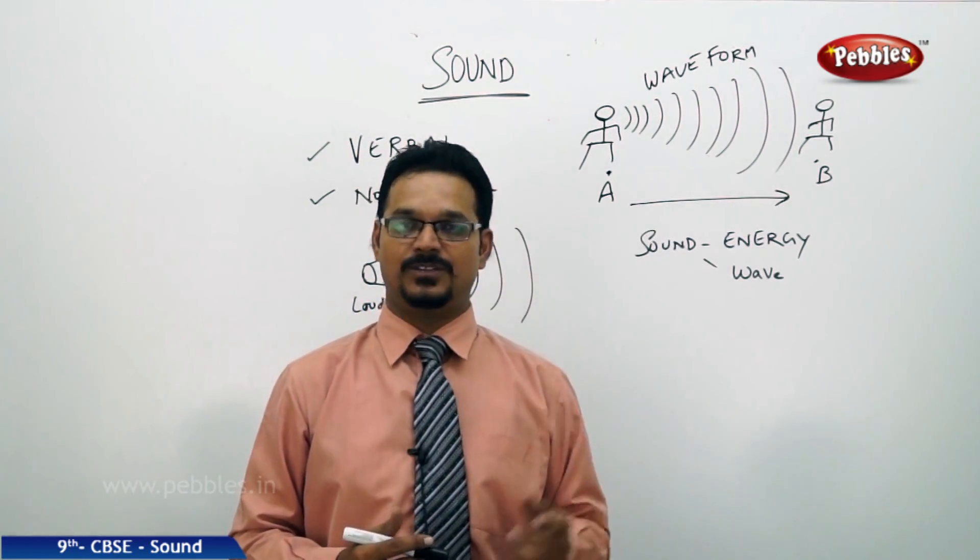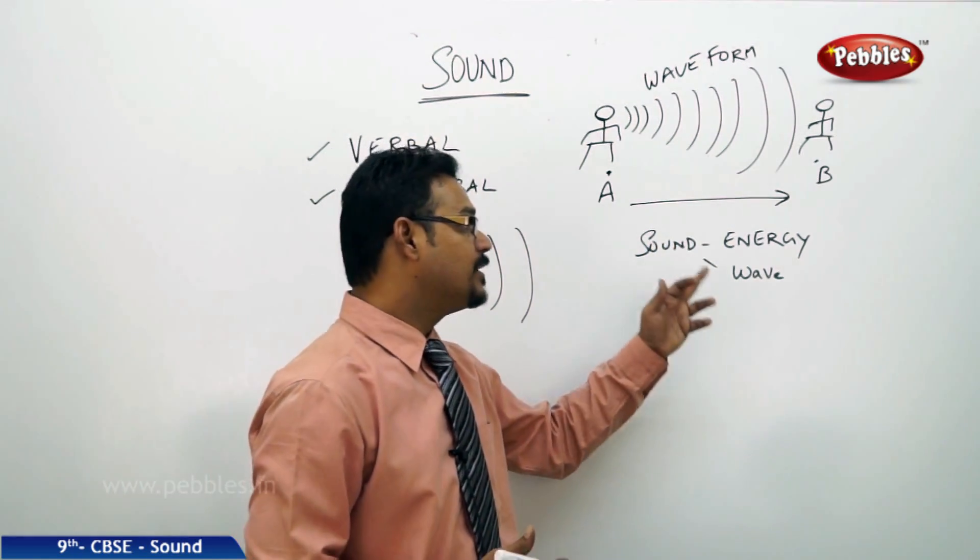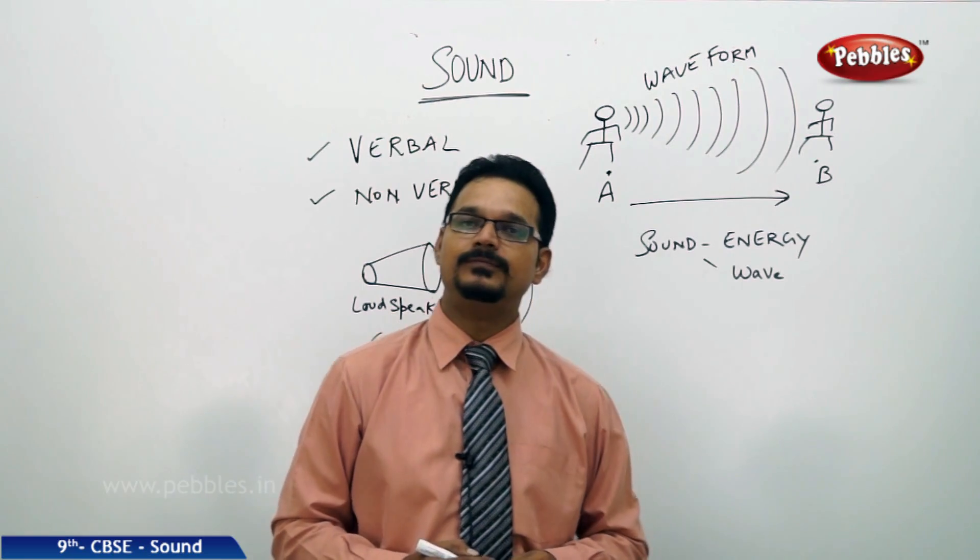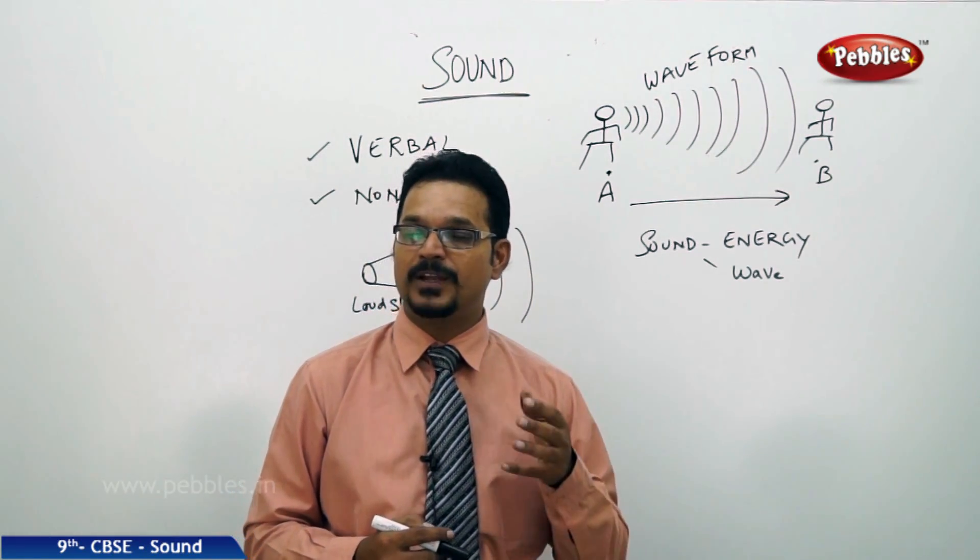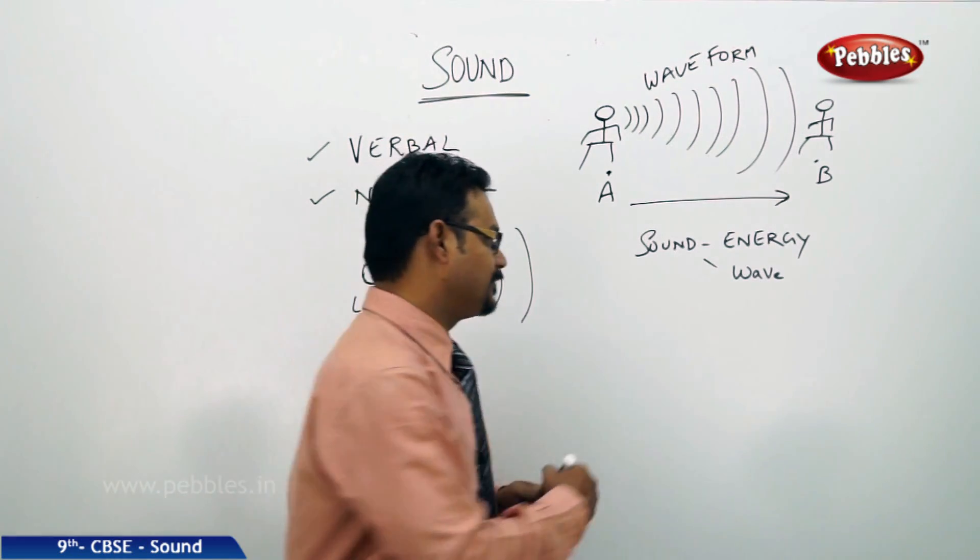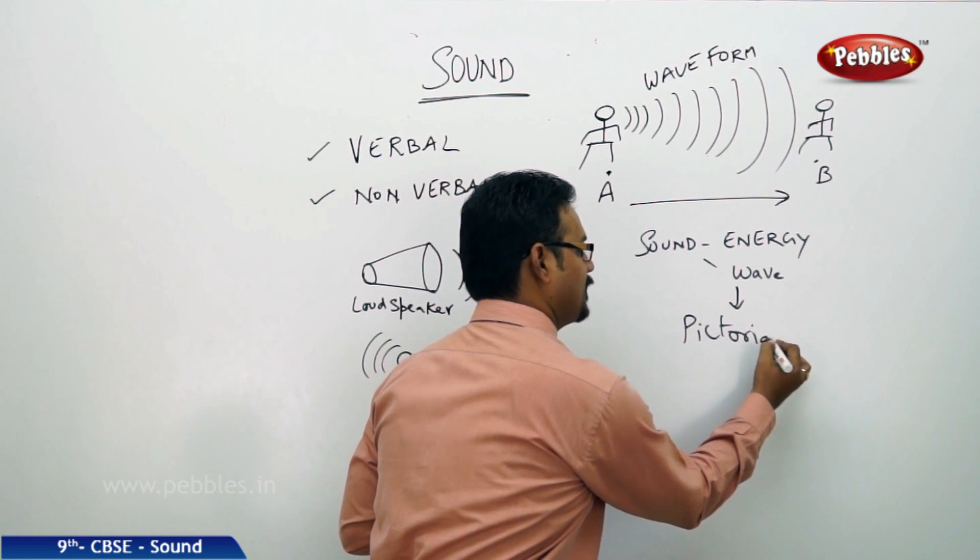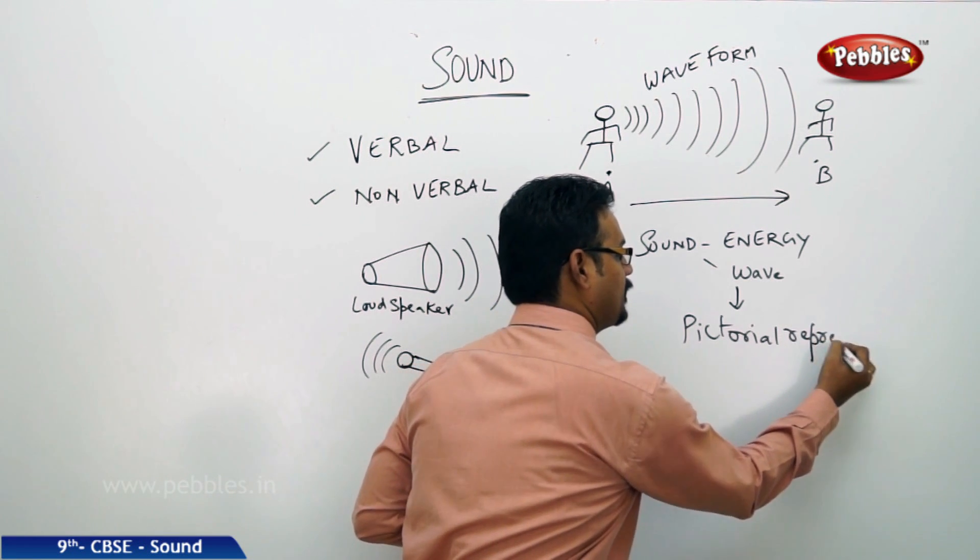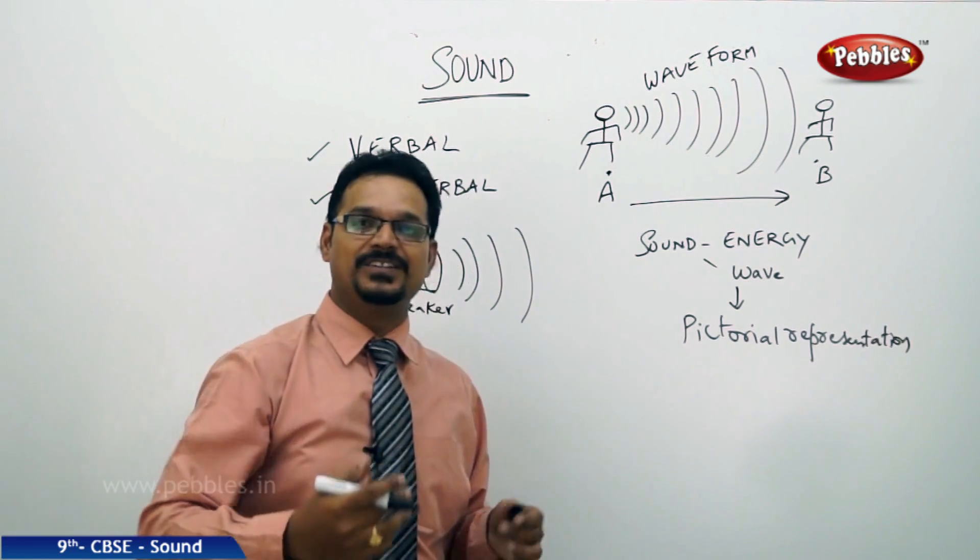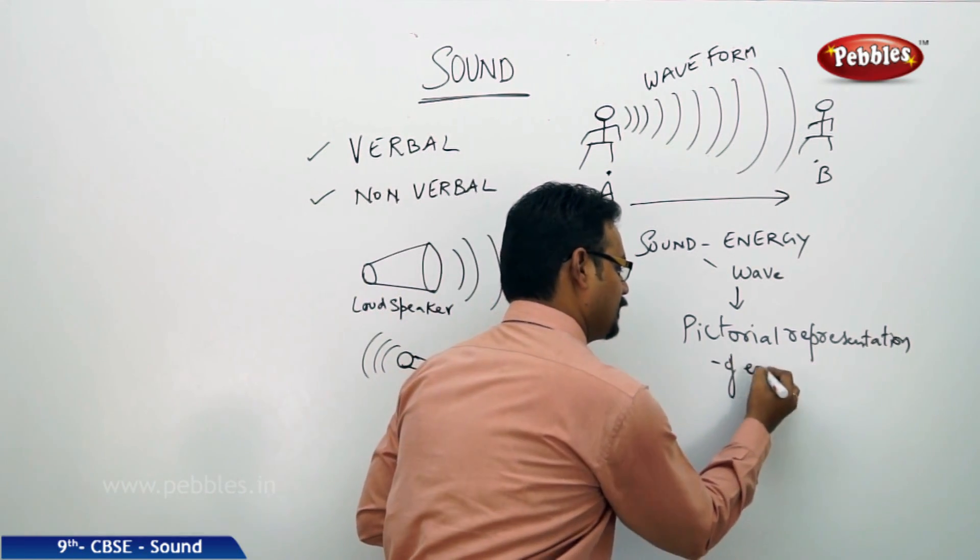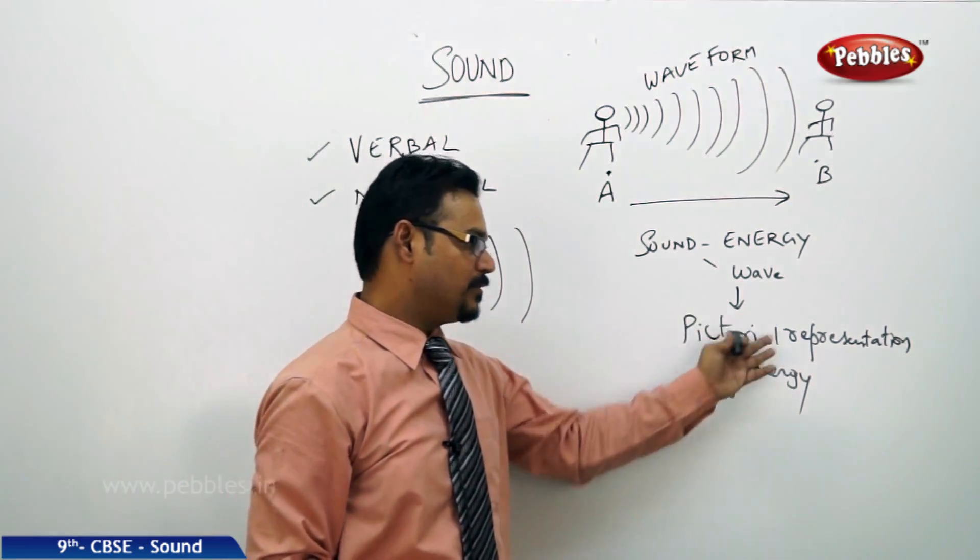Now the question comes how do you show that energy on the board? How do you show that? How do you experience that energy? So that's why scientists made a pictorial representation and the pictorial representation of energy is called wave, waveform. So wave is the pictorial representation of energy.